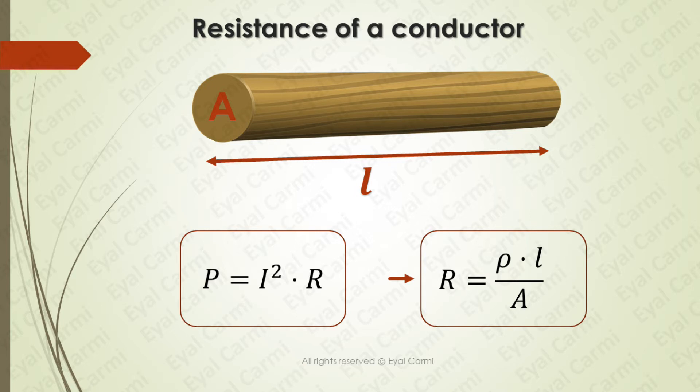Resistance R equals rho times L divided by A, where rho is electrical resistivity, L is the conductor length, and A is the cross-sectional area. Rho is determined by the conductor material. If we want to reduce the resistance, we need to shorten the length or enlarge the thickness.